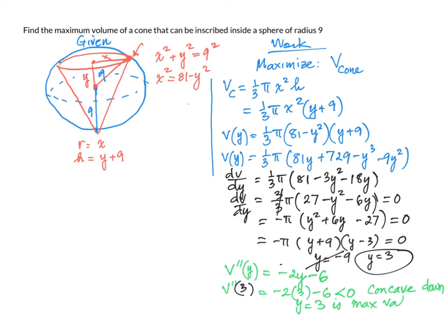Now, we have the dimensions for maximum volume of a cone that can be inscribed in a sphere of radius 9. So we have the height equals y is 3 plus 9. That is 12.